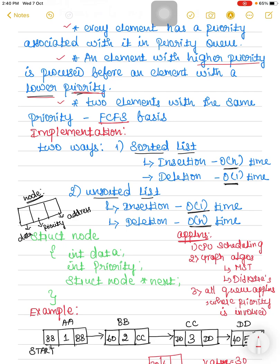When it comes to implementation, there are two ways to implement a priority queue: either you can use a sorted list or an unsorted list to store the elements. If you are maintaining a sorted list, since elements are sorted based on priority, insertion will take O(n) time. Why? Because you have to identify the right place to insert the new node within the sorted order.